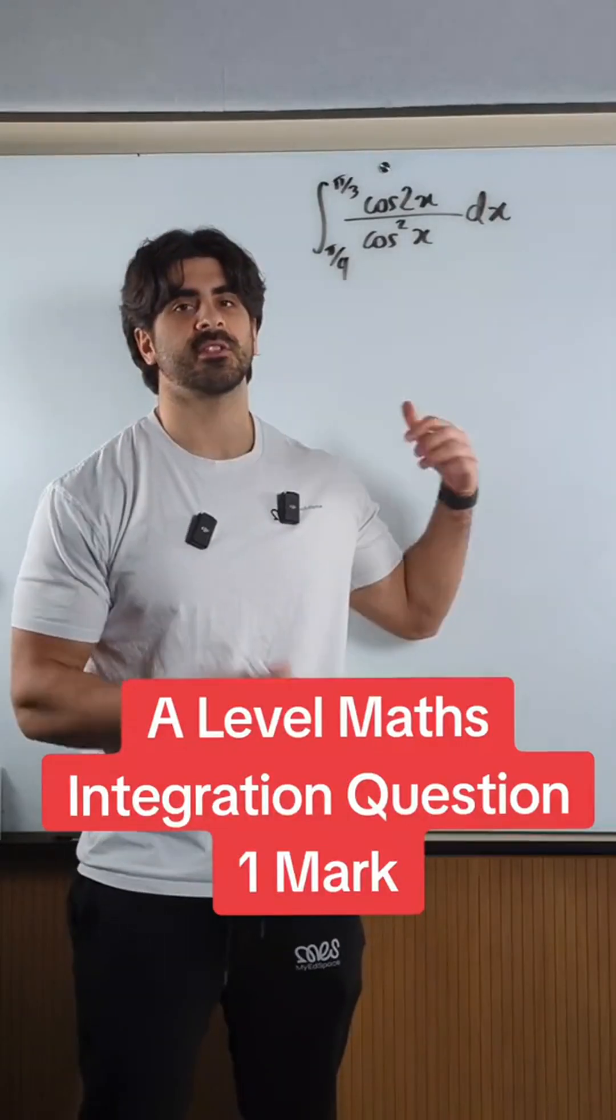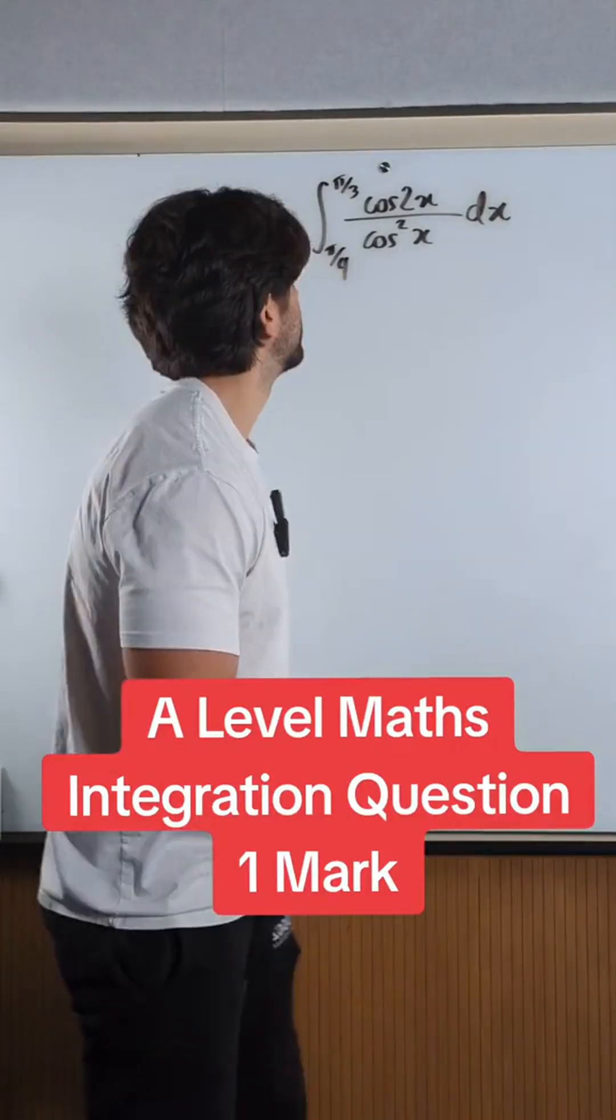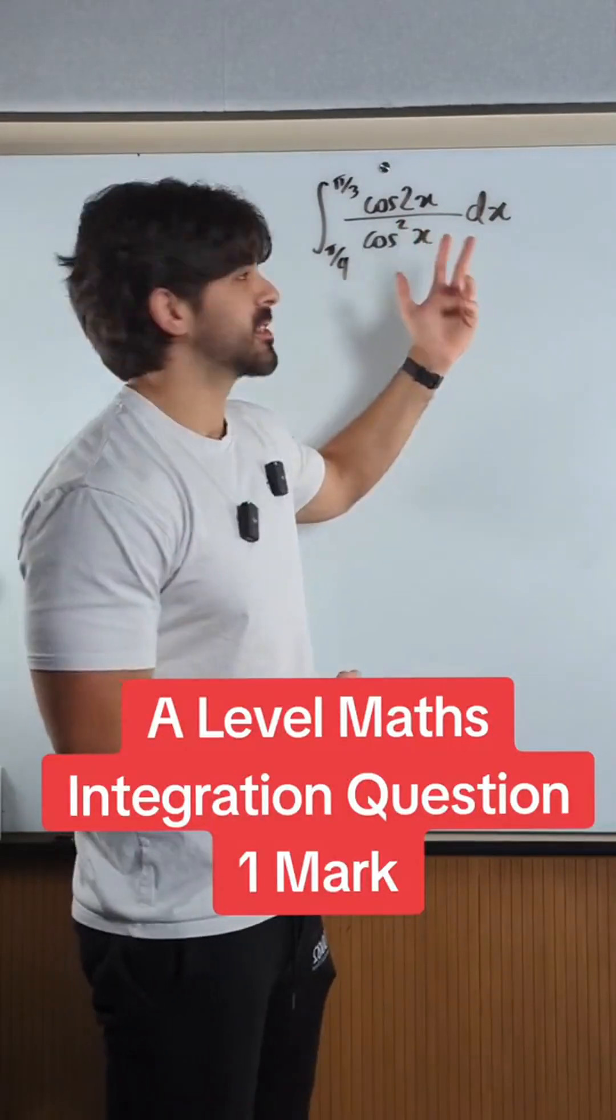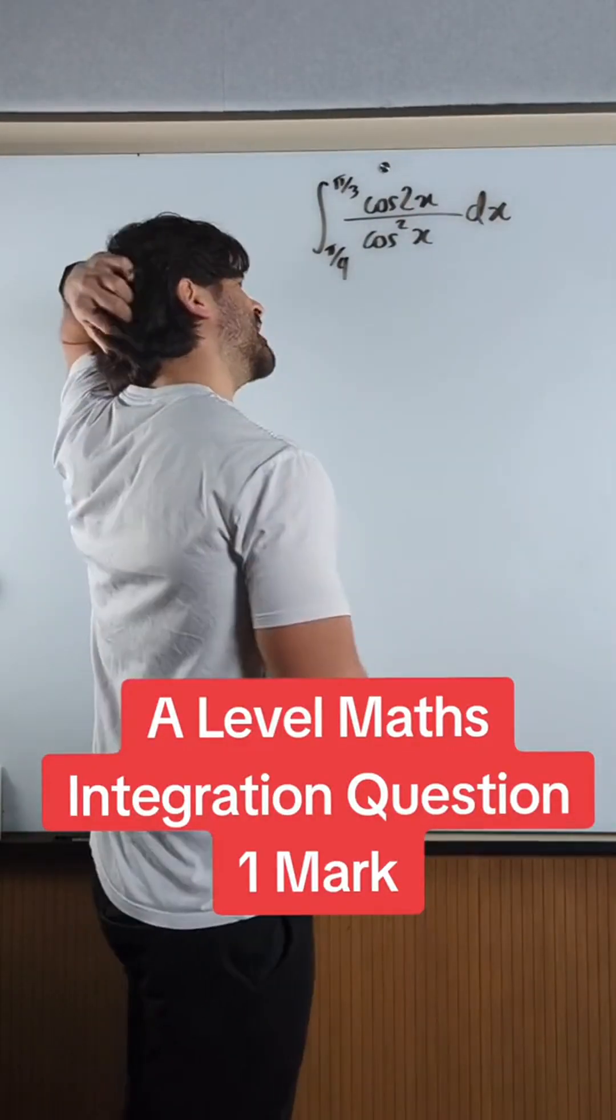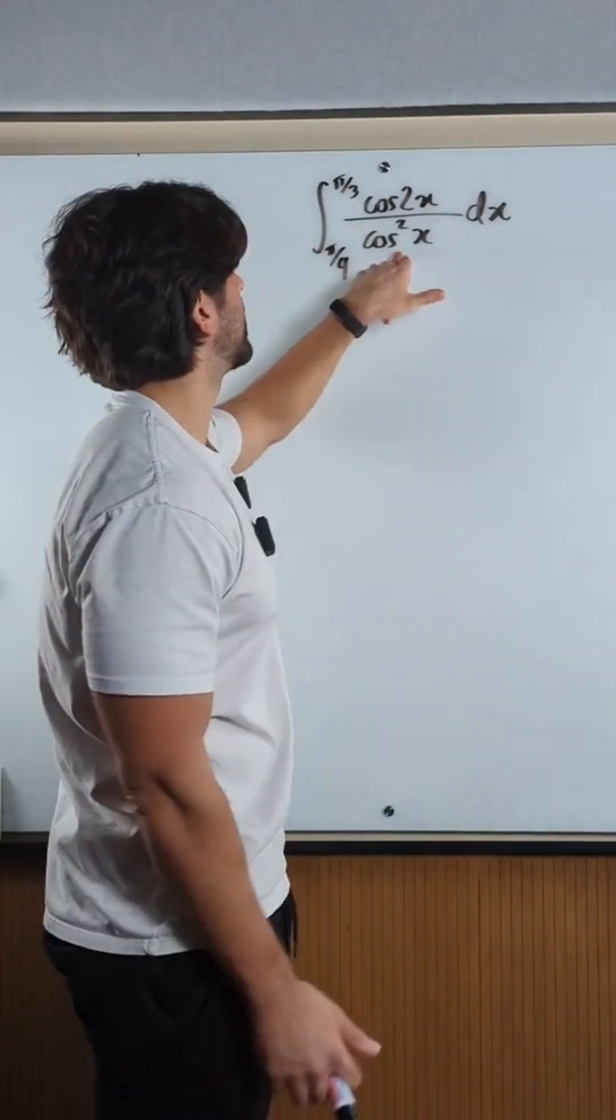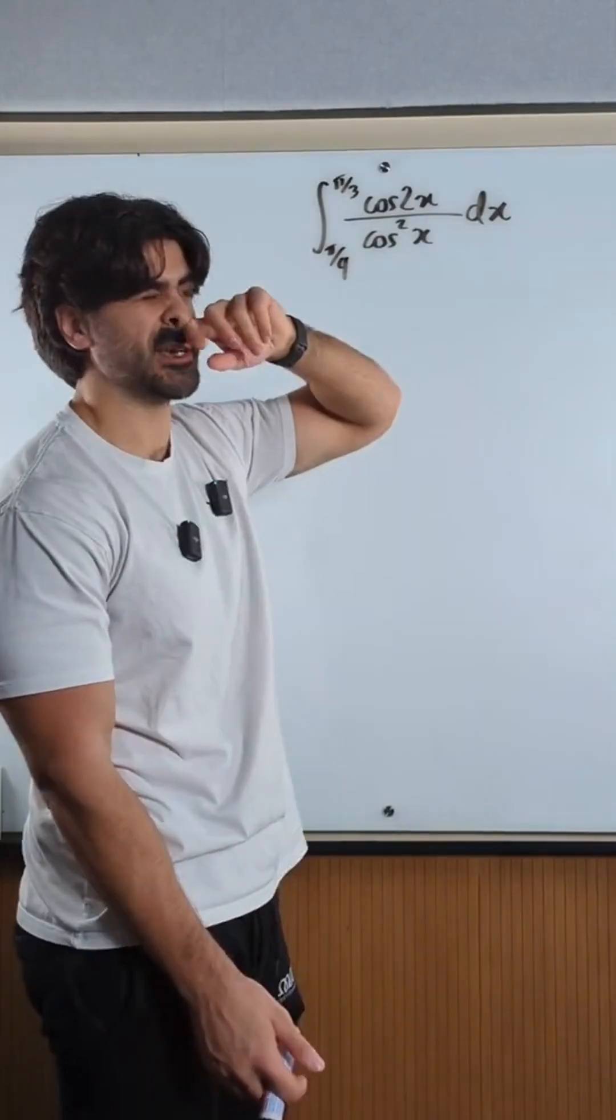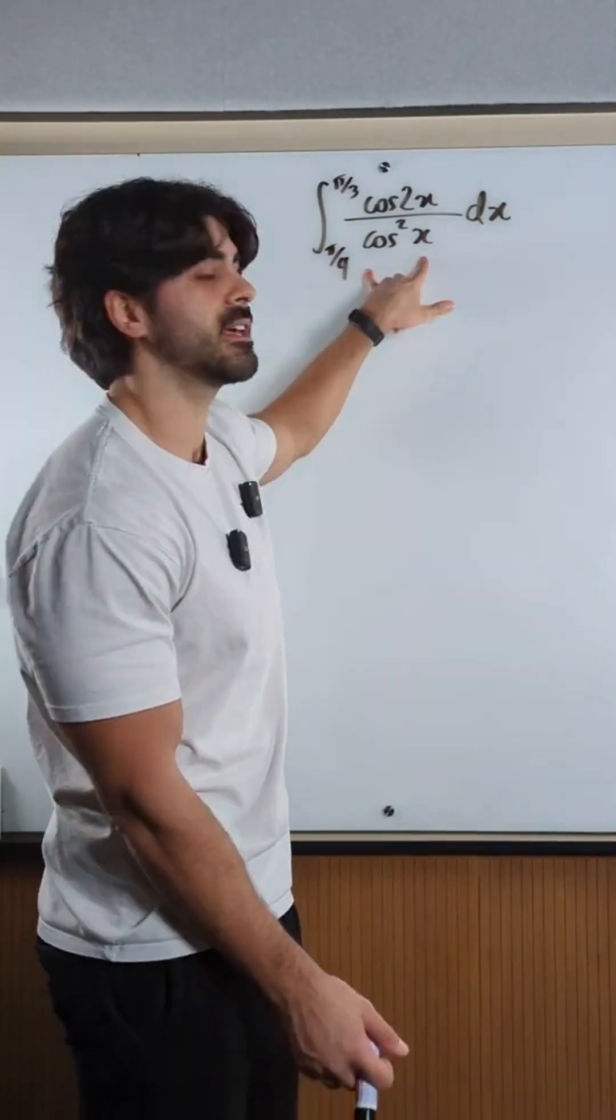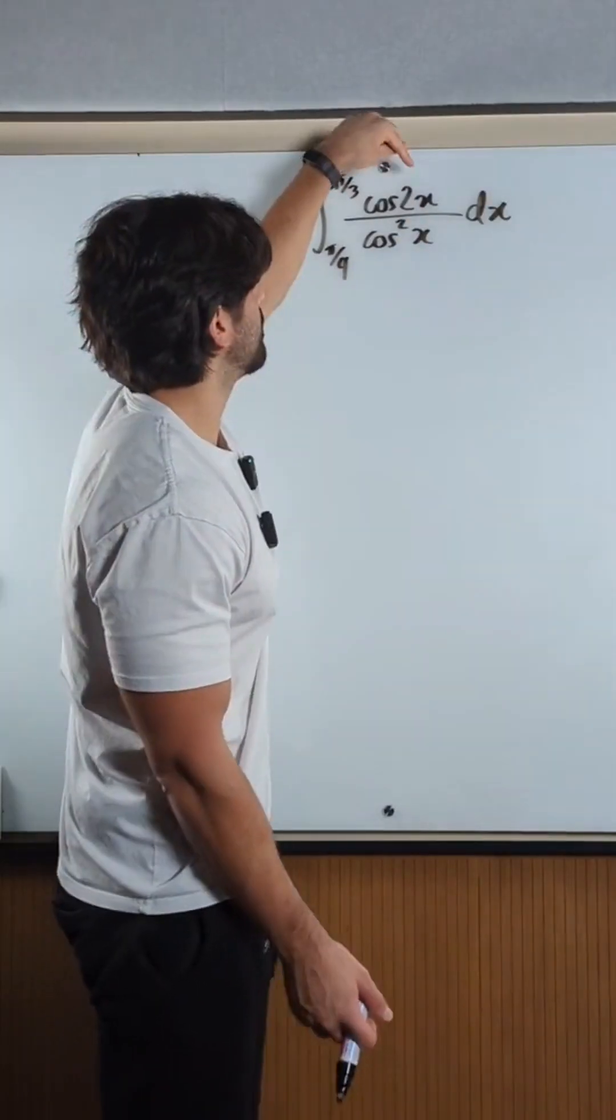Loong gang, integrate this easy one mark question. We have to rewrite it obviously. We have cos²x over cos²x. I mean you can rewrite this using double angle IDs in terms of cos2x, but you don't want to do that because it will introduce two terms in the denominator. I like that there's one term here. I'm going to rewrite this.